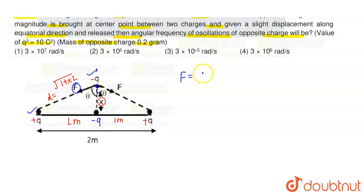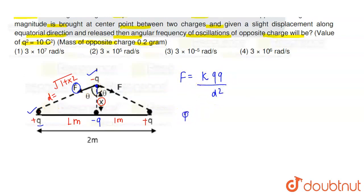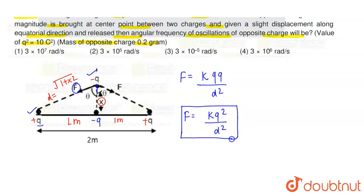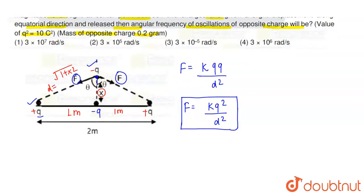F की value calculate करते हैं: F = kq₁q₂/d². q1 और q2 दोनों की magnitude same है — q। Nature अलग-अलग है लेकिन magnitude same है। Magnitude force का: F = kq² / d². दूसरे positive charge के साथ भी यही same attraction force F लगेगा।